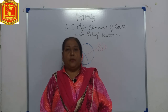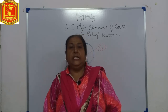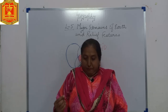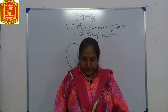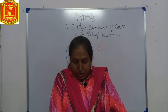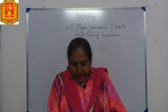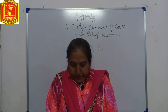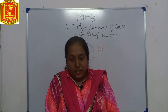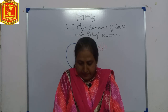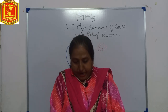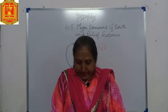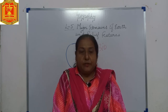Now we will study the major landforms of the earth. Basically we have three types: mountains, plateaus, and plains. A mountain is a high land mass with a sharply sloping surface, considerably higher than the surrounding areas, usually occurring in chains or ranges extending over hundreds of kilometers. Mountains differ in shapes and heights — young mountains like the Himalayas are very high and have pointed peaks, while old mountains like the Aravalli and the Appalachian are low in height and have rounded tops.